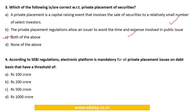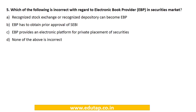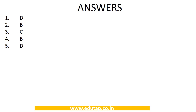MCQ 4: According to SEBI regulations, electronic platform is mandatory for all private placement issuances on a debt basis with a threshold of — options 100 crore, 200 crore, 500 crore, or 1000 crore. Answer: B — ₹200 crore. MCQ 5: Which of the following is incorrect with regard to Electronic Book Provider? All three statements are correct, so the answer is D — none of the above is incorrect.